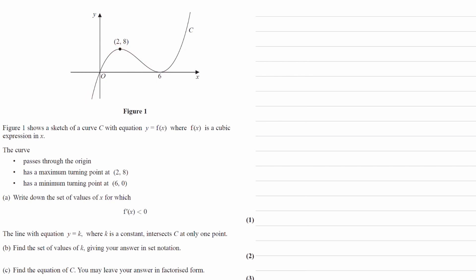So we're told on the question that we have a cubic function, and we're given some information about the points where the curve crosses the x-axis, and also where the maximum and the minimum point are. And for part A, we're trying to work out the set of values for which the gradient of the function is less than 0.